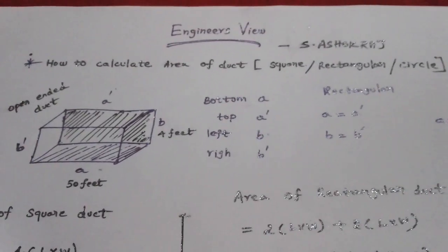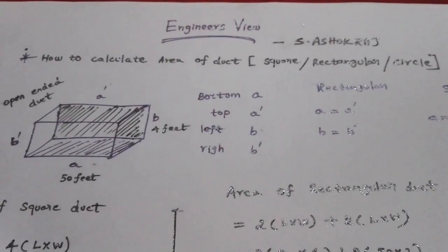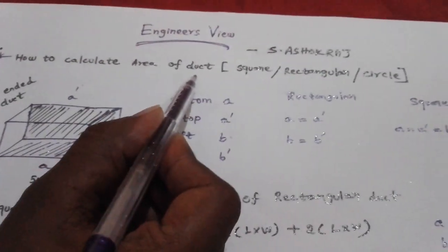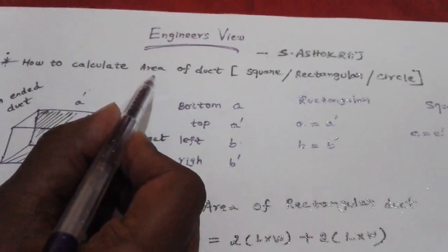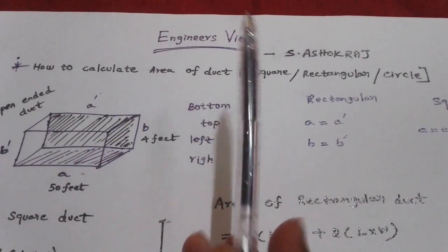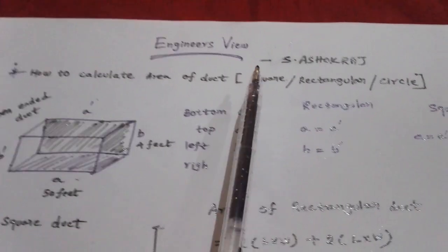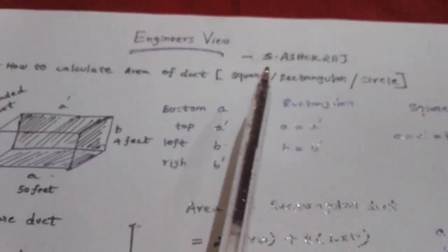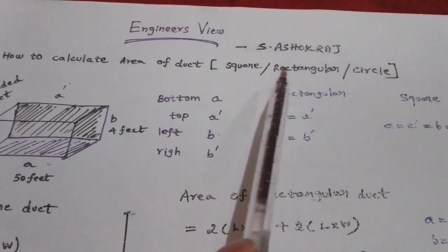Let's talk about how to calculate the area of the duct. In this case, there are square ducts, rectangular ducts, and circular ducts.